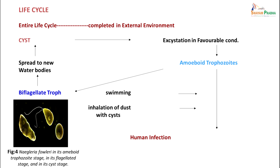It is not found in salt water like the ocean. A person is not usually infected by drinking contaminated water, and spread from person to person is not common. Infection comes from warm water containing the trophozoite, which enters through the nose and goes to the brain tissue. The entire life cycle is completed in the external environment — a cyst present in water bodies undergoes excystation in favorable conditions to form amoeboid trophozoites, which are the infective forms.